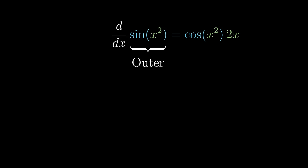Notice what we came out with here: we have the derivative of the outside function, and it's still taking in the unaltered inside function, and then we're multiplying it by the derivative of that inside function.